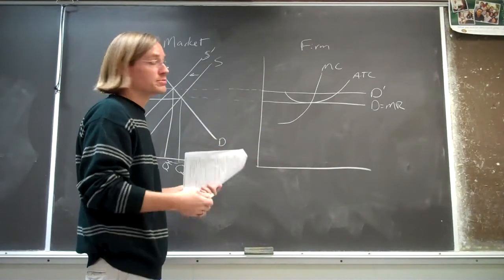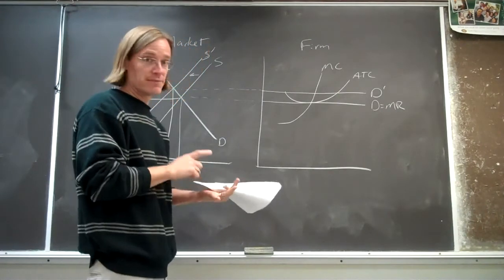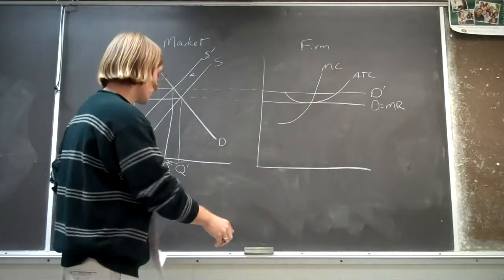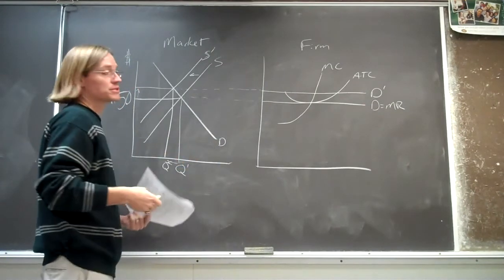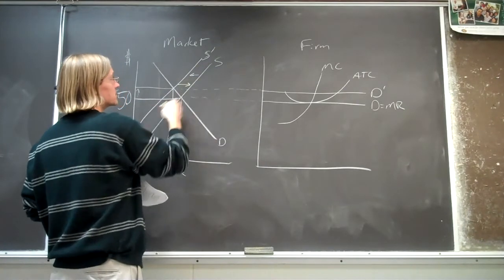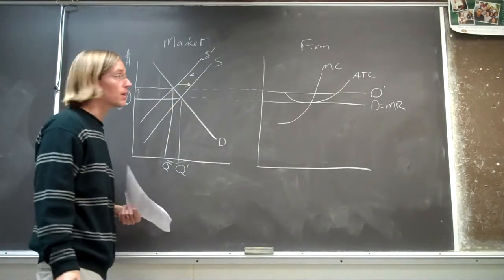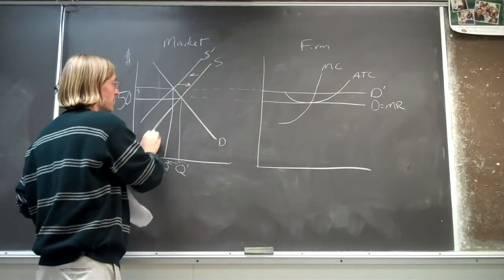And whenever firms make a profit, what's that going to do in perfect competition? Well, because we have no barriers to entry, firms are going to come back into the industry. So people are going to start getting back into the industry, and we would expect the supply curve to shift right back where it was. And so shift back to the original supply curve.